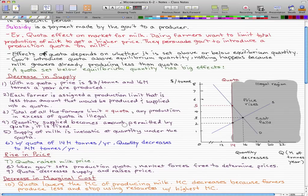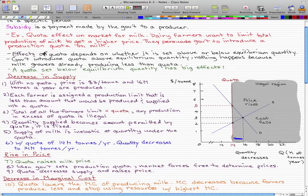Now the quantity supplied becomes the amount permitted by the quota. It is fixed, and supply of milk is inelastic at the quantity under the quota. So with a quota of 14 million tons per year, quantity decreases to 14 million tons per year. Let's just jot that down in our graph. See this blue arrow that I'm drawing? That's the quantity decrease.